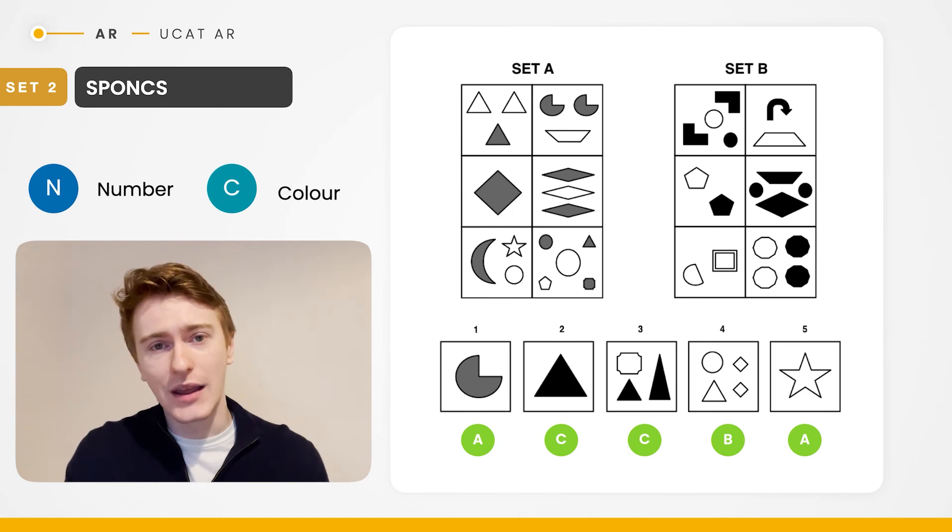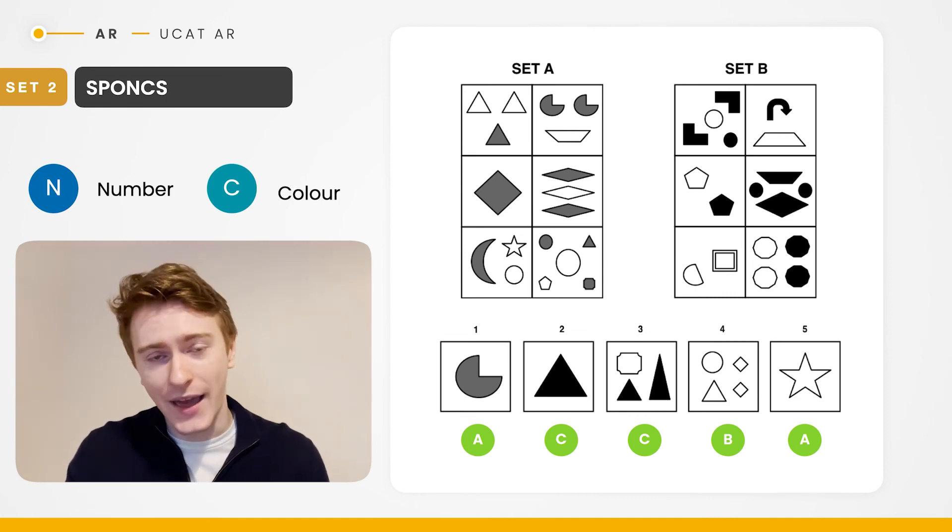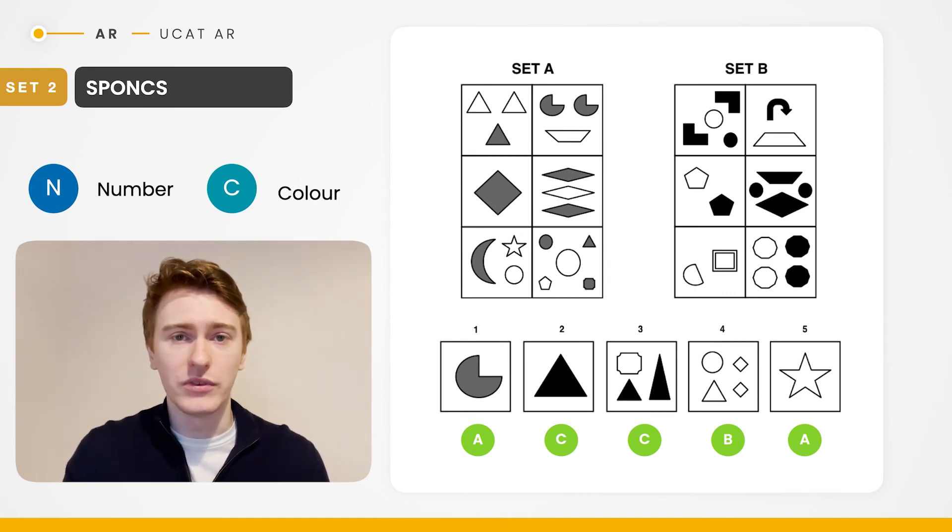And finally, the final shape, test shape five, belongs to set A. And that's because, again, it's one item, but it's white this time, and that allows it to be categorised into set A.